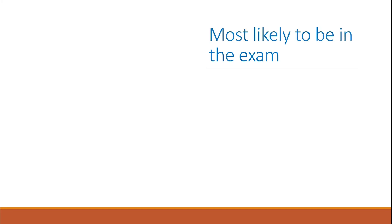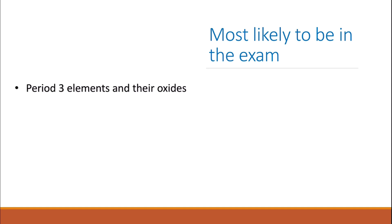Then there are topics which are most likely to be in the exam this year, because they are quite common and haven't been in the exam last year or the last few years. The first topic is Period 3 elements and their oxides. Last year there was a question about Group 7 — particularly about chlorine and the disproportionation reactions of chlorine — and a question about Group 2 elements, but nothing about Period 3 elements and their oxides. So it's highly likely there will be a question about Period 3 elements and their oxides this year.